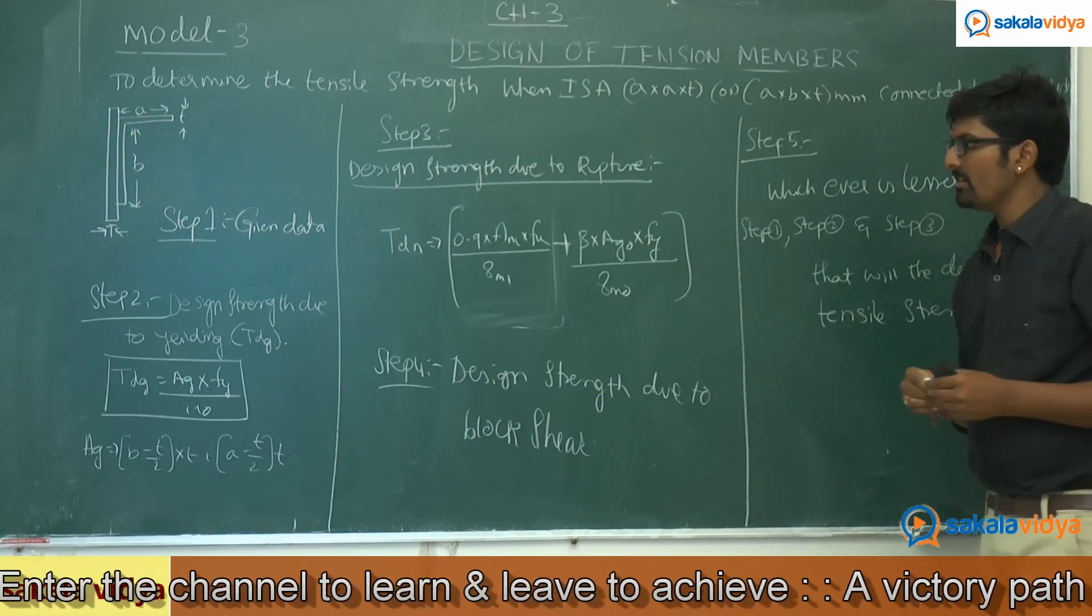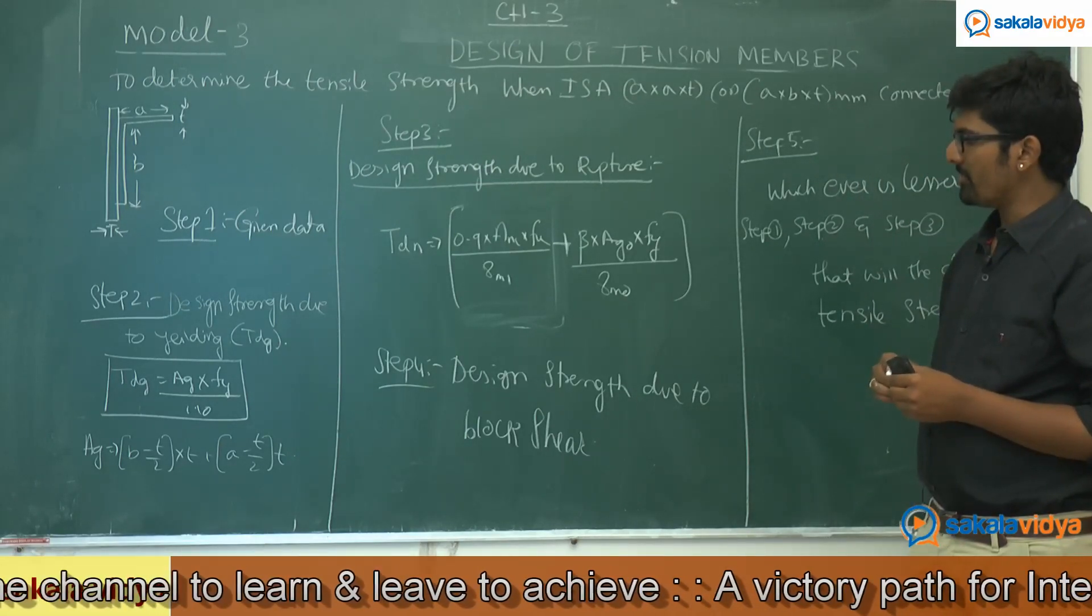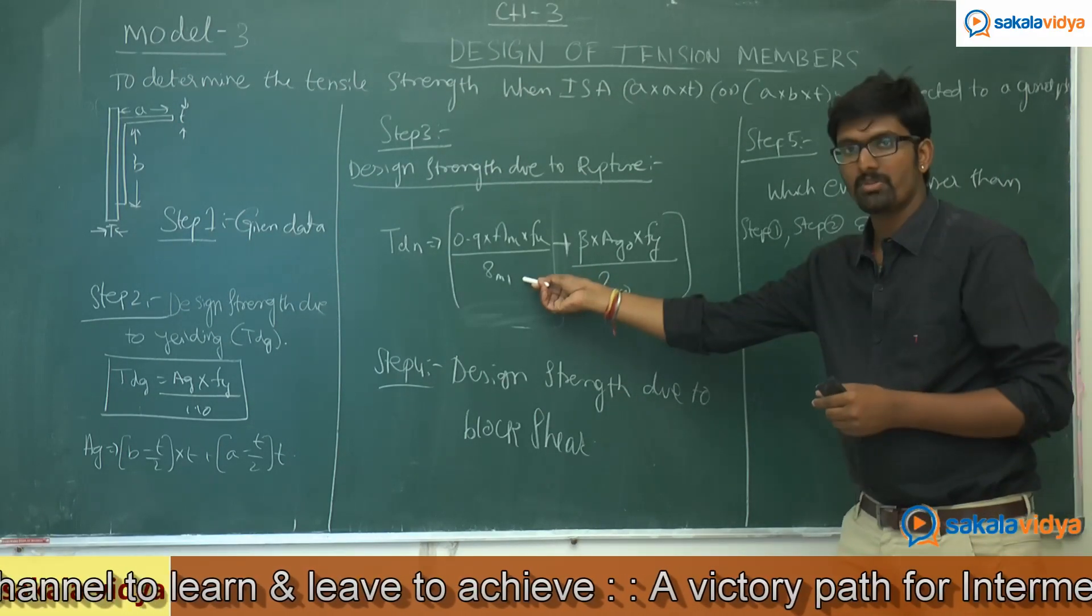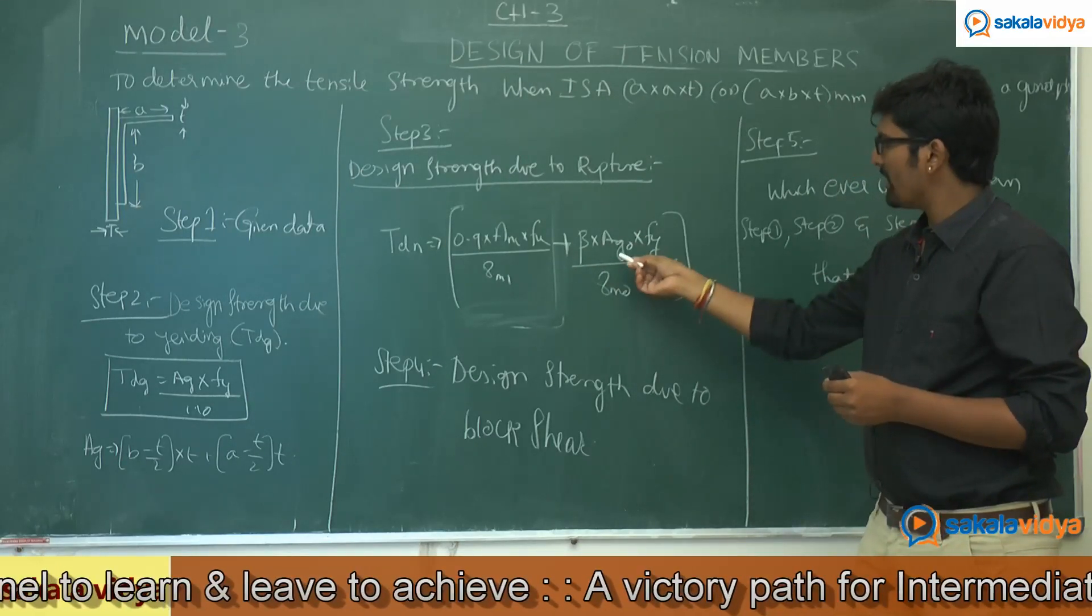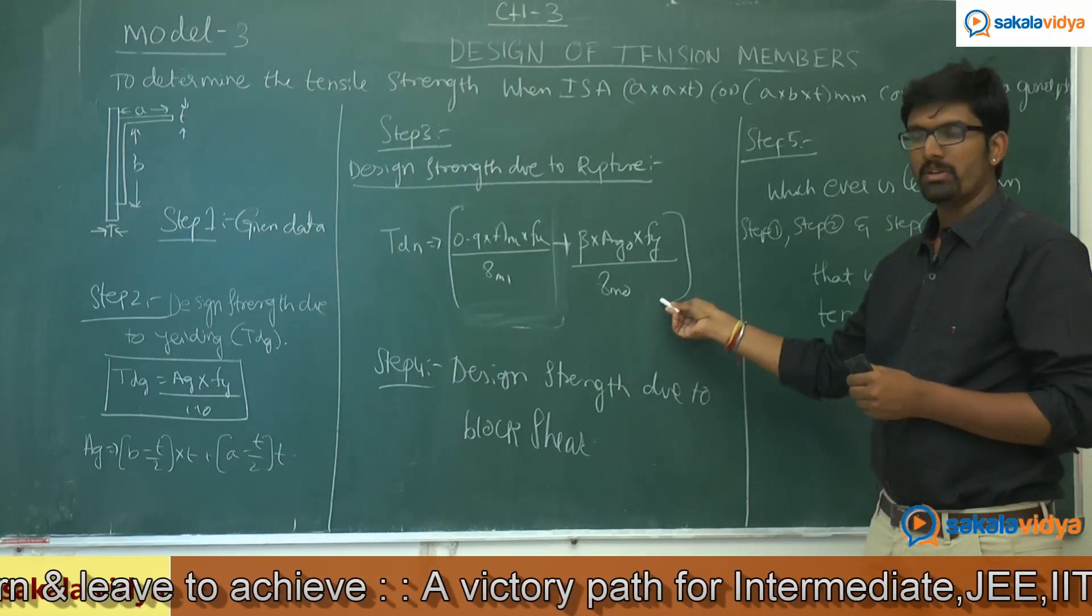Step 3, design strength due to rupture. That is TDN equals 0.9 into AN into FU by partial safety factor 1, that is 1.25, plus beta into AG0 into FY by partial safety factor 0, that is 1.10.